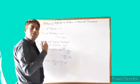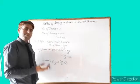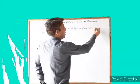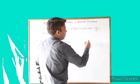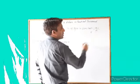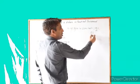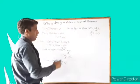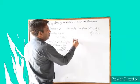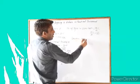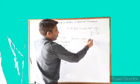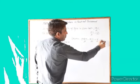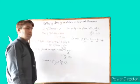Now, how many byes go to the upper half and to the lower half? The number of byes in the upper half uses the formula (nb−1)/2. With 5 byes total: (5−1)/2 = 2 byes in the upper half. The formula for byes in the lower half is (nb+1)/2, so (5+1)/2 = 3 byes in the lower half.